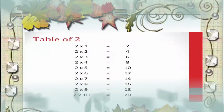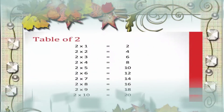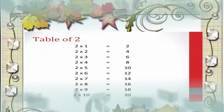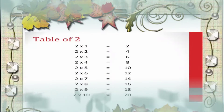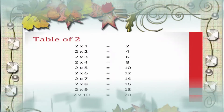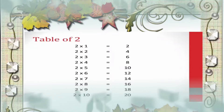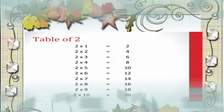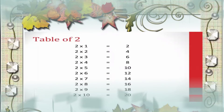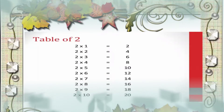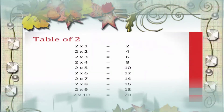2 1's are 2, 2 2's are 4, 2 3's are 6, 2 4's are 8, 2 5's are 10, 2 6's are 12, 2 7's are 14, 2 8's are 16, 2 9's are 18, 2 10's are 20.